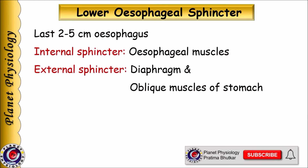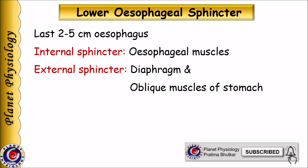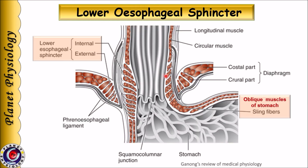Now let us study the lower esophageal sphincter. It is the last 2–5 cm portion of the esophagus and has two components — internal and external. As seen in the picture, the internal sphincter is formed by the circular smooth muscle fibers of the esophagus, thickened to form a functional sphincter — not an anatomical sphincter. The external component is formed by the muscles of the diaphragm, which act like a pinch cock, and the oblique muscles of the stomach, which form sling fibers.